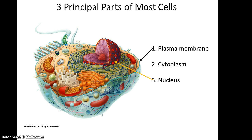If you look at a cell, it has three principal parts: the plasma membrane, the cytoplasm — which is everything between the plasma membrane and the nucleus — and the nucleus, which is the largest organelle in a cell and houses the cell's DNA. Note this is a eukaryotic cell since we're focusing on human anatomy. Bacteria look quite different and are much, much smaller.